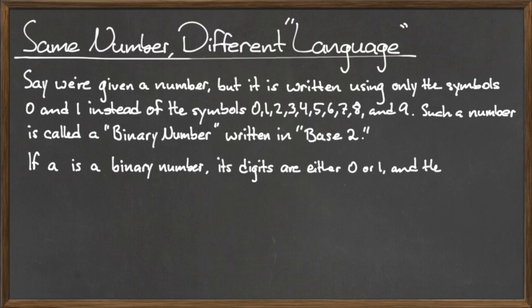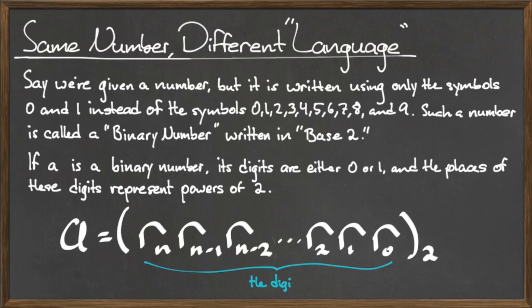In a base 10 system, the rightmost digit represents 10 to the 0th power, the digit to the left of that represents 10 to the first power, and so on.